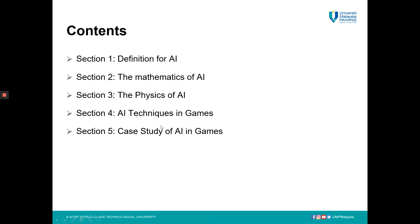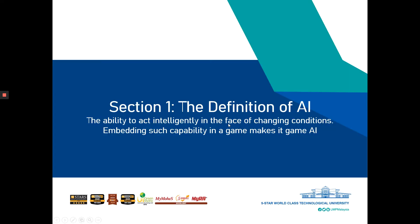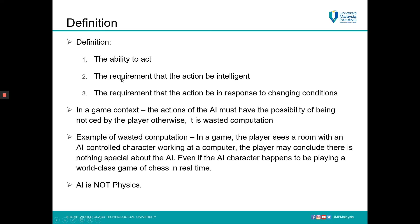So now let's go to the definition. How can you define AI — Artificial Intelligence? The definition of AI is basically the ability to act intelligently in the face of changing conditions. Embedding search capability in a game makes it a game AI. By definition, there are three parts of AI we can understand through games: the ability to act, the requirement that the action be intelligent, and the requirement that the action be in response to changing conditions.